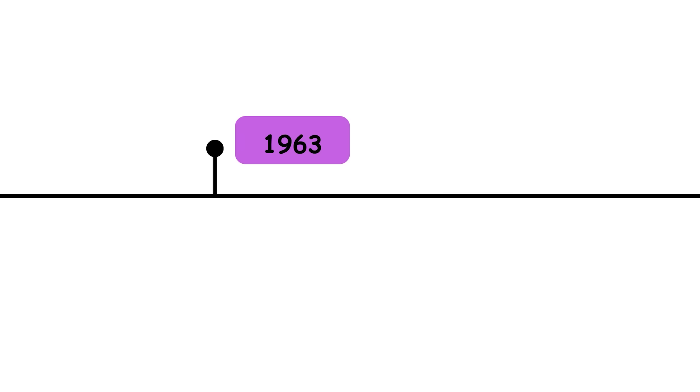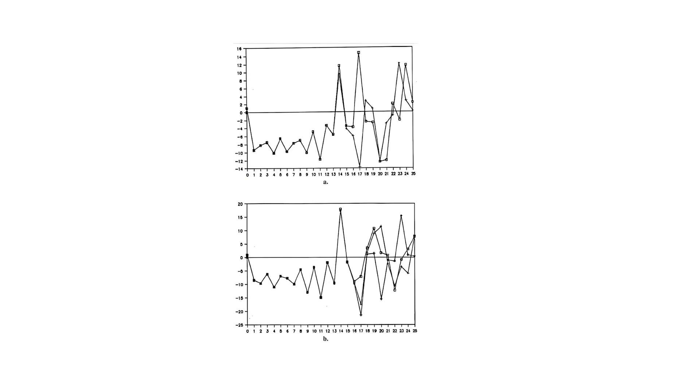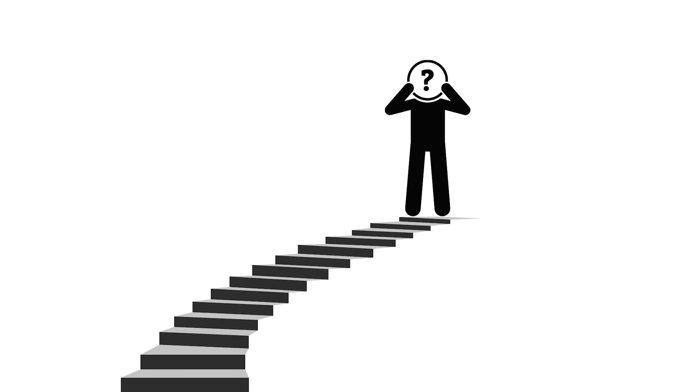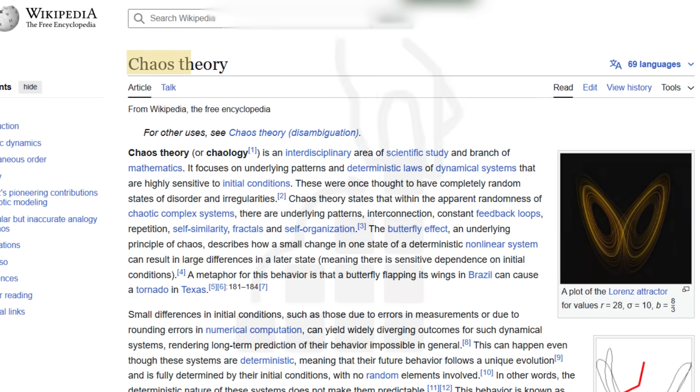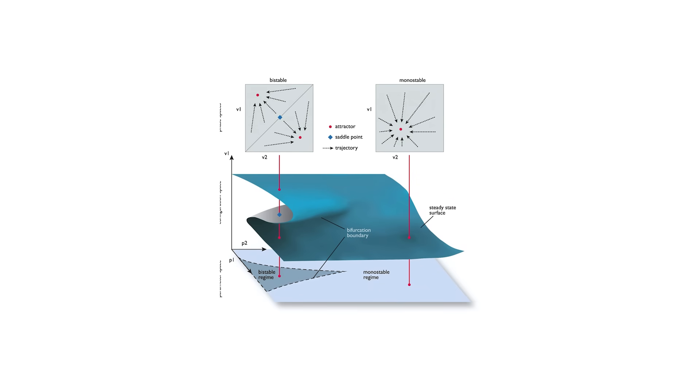1963: Lorenz Equation. The Lorenz Equation models deterministic chaos, showing how small changes in initial conditions can lead to unpredictable behavior. It is fundamental to chaos theory, with applications in meteorology, physics, and dynamical systems.